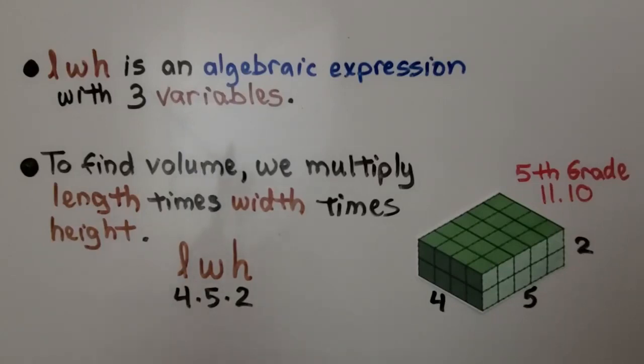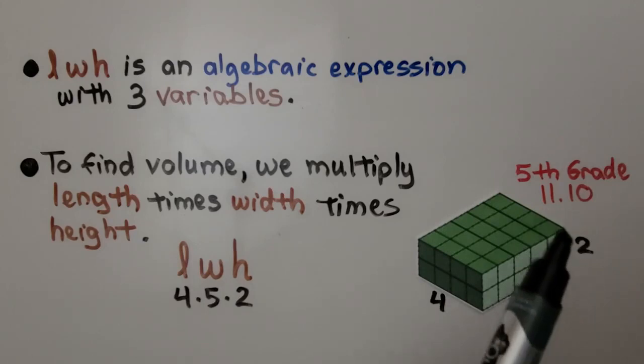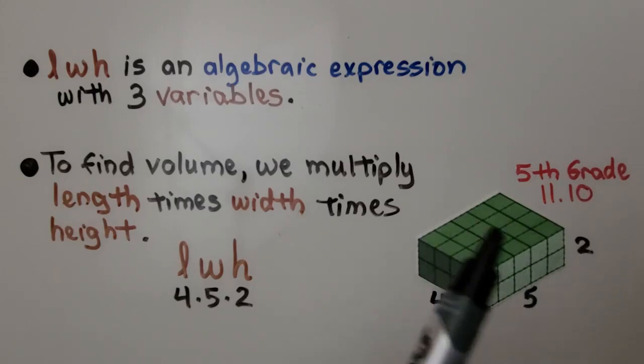lwh is an algebraic expression with three variables: length, width, and height. To find volume, we multiply length times width times height. We have a length of four, a width of five. We multiply them together, and we have four times five, which is twenty. That means the first bottom layer has twenty unit cubes, and its height is two. We just multiply the twenty times two. We know there's forty cube units here. We learned about that in fifth grade math 11.10. If you don't remember it, it's linked in the description, so you can watch it quickly if you're confused.